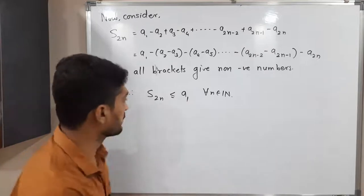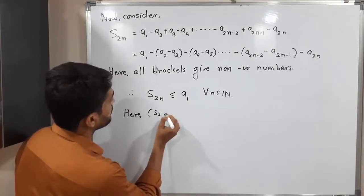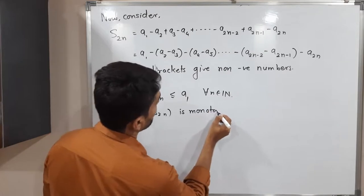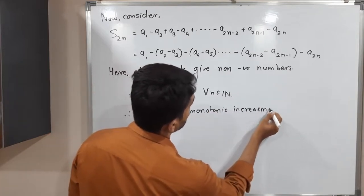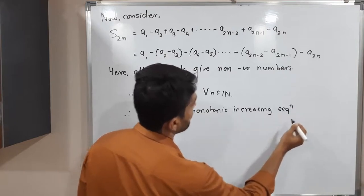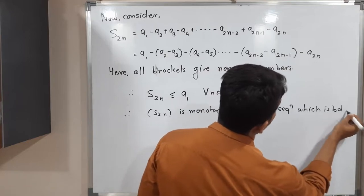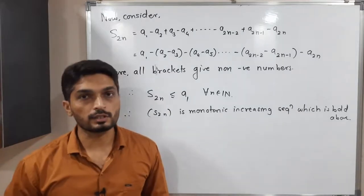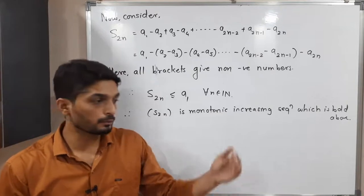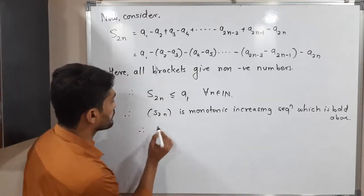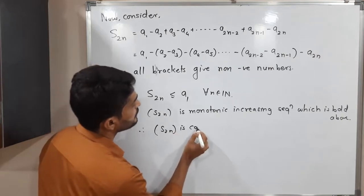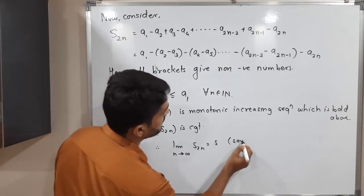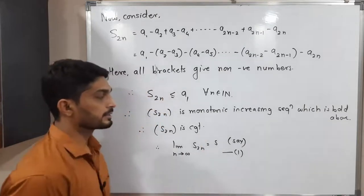Therefore s2n is a monotonic increasing sequence which is bounded above. We have already proved that any monotonic increasing sequence which is bounded above is convergent. Therefore s2n is a convergent sequence. Let its limit be s, so the limit as n tends to infinity of s2n equals s. Call this equation (1).